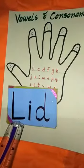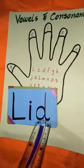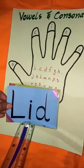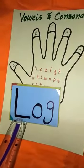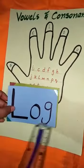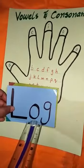Next one is L-E-D, lid. E is the vowel. And L-A-G, log. A is a vowel.